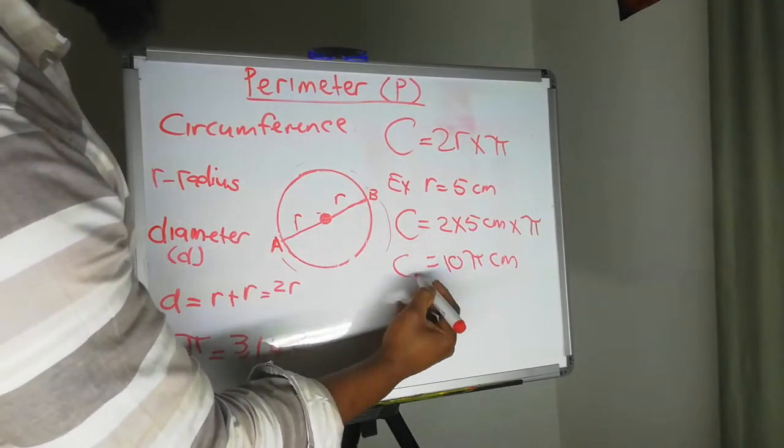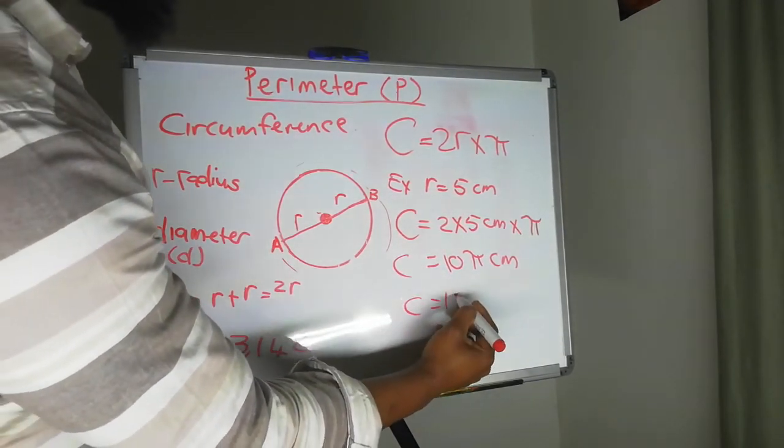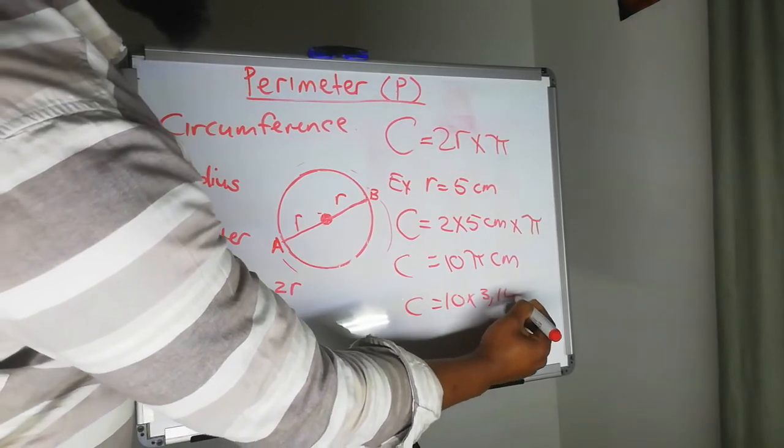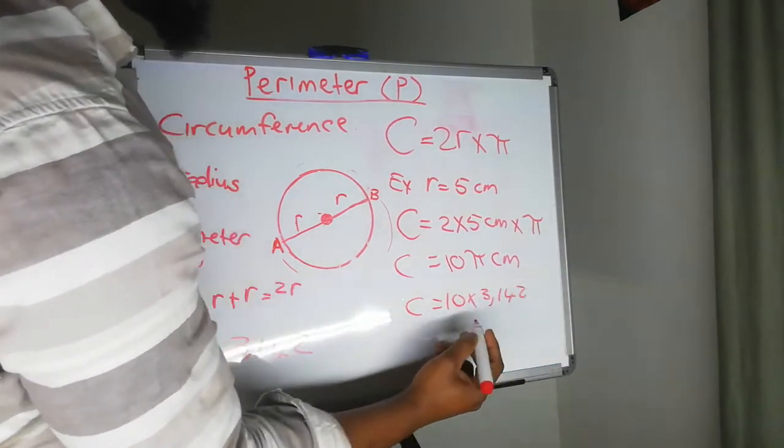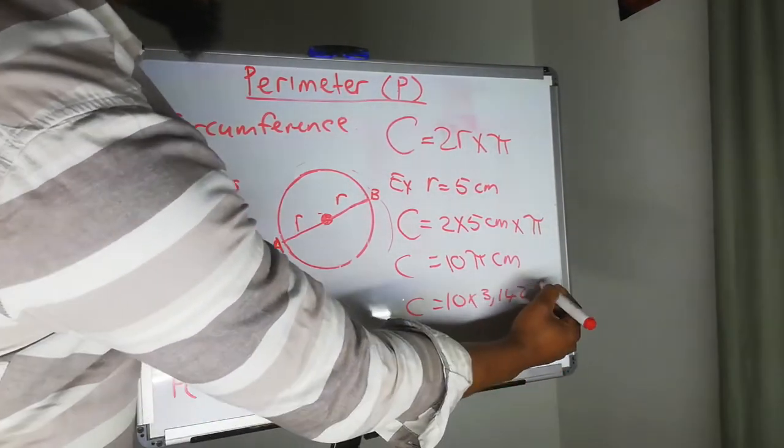So then we can go further and say that 10 times 3.142. Let's put centimeters in somewhere.